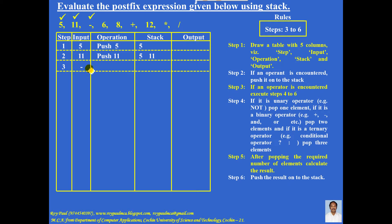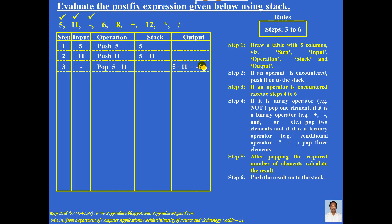The next input is an operator: minus. If an operator is encountered, three things must be done. First, minus is a binary operator, so pop two elements from the stack — the topmost elements are popped and the stack is now empty. Second, calculate the answer: the left operand is written first, followed by the operator, followed by the right operand — so 5 minus 11 equals minus 6. Third, push this answer onto the stack, so the stack now contains minus 6.